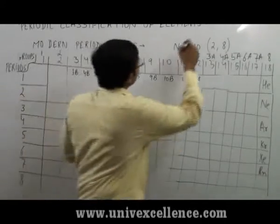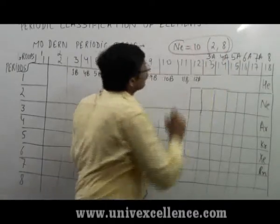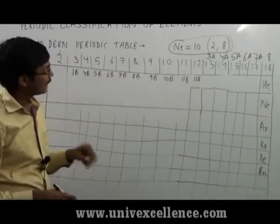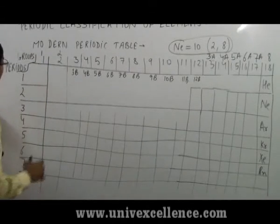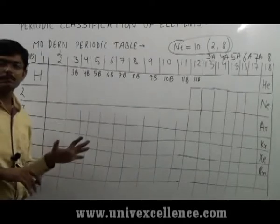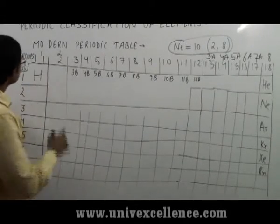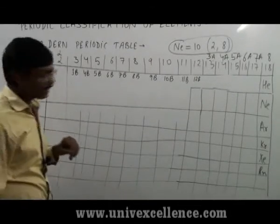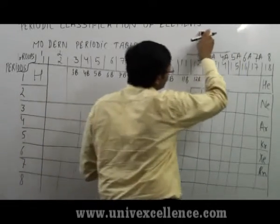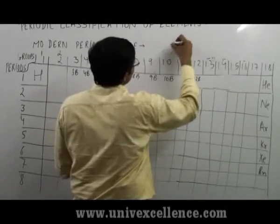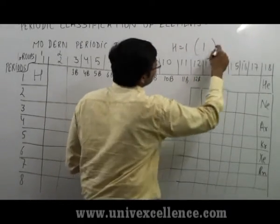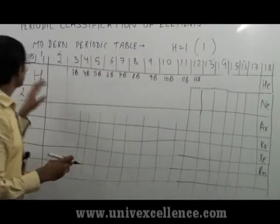So the rule for giving the position to a particular element was played by the valency or valence representation of that element. Similarly, in the first group or in the first period, hydrogen was kept because its valency was, there is one electron which is present in the hydrogen, and it can be written as one electron. So its valence structure can be one only. So it was kept in one.